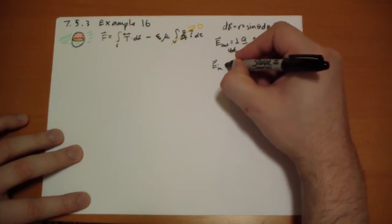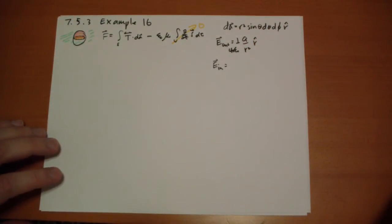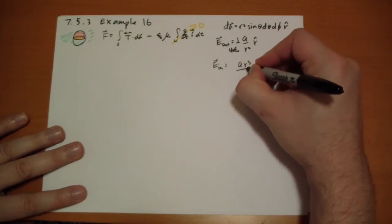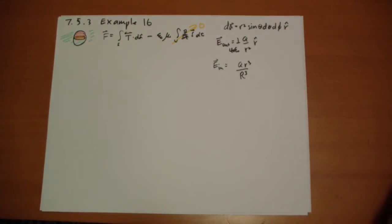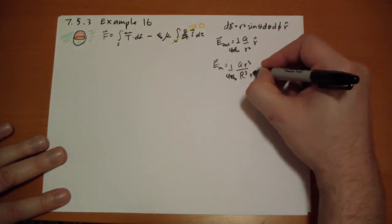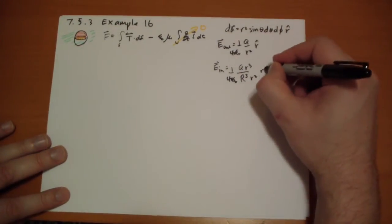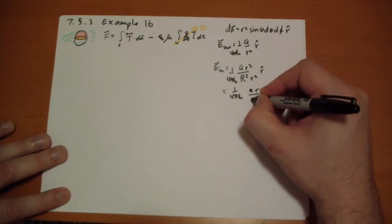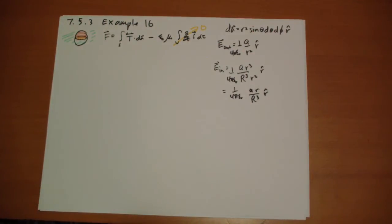And the electric field on the inside is similarly easy to calculate. So you take the charge density, which is q divided by four thirds pi r cubed, multiply it by the volume of the charge enclosed, so you get r cubed over big R cubed, is the charge enclosed at radius r. And then you divide by the surface area of the Gaussian surface, so you have one over four pi epsilon knot, and then that's r squared. And the direction it's going to point is also in the r hat direction, and using some cancellation. That's what it looks like.